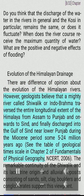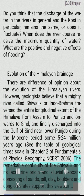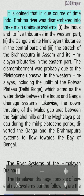There are differences of opinion about the evolution of the Himalayan rivers. However, geologists believe that a mighty river called Shiwalik or Indo-Brahma traversed the entire longitudinal extent of the Himalaya from Assam to Punjab and onwards to Sindh, finally discharging into the Gulf of Sindh near lower Punjab during the Miocene period, some 5–24 million years ago. The remarkable continuity of the Shiwalik and its lacustrine origin and alluvial deposits of sands, silt, clay, boulders, and conglomerates support this viewpoint.